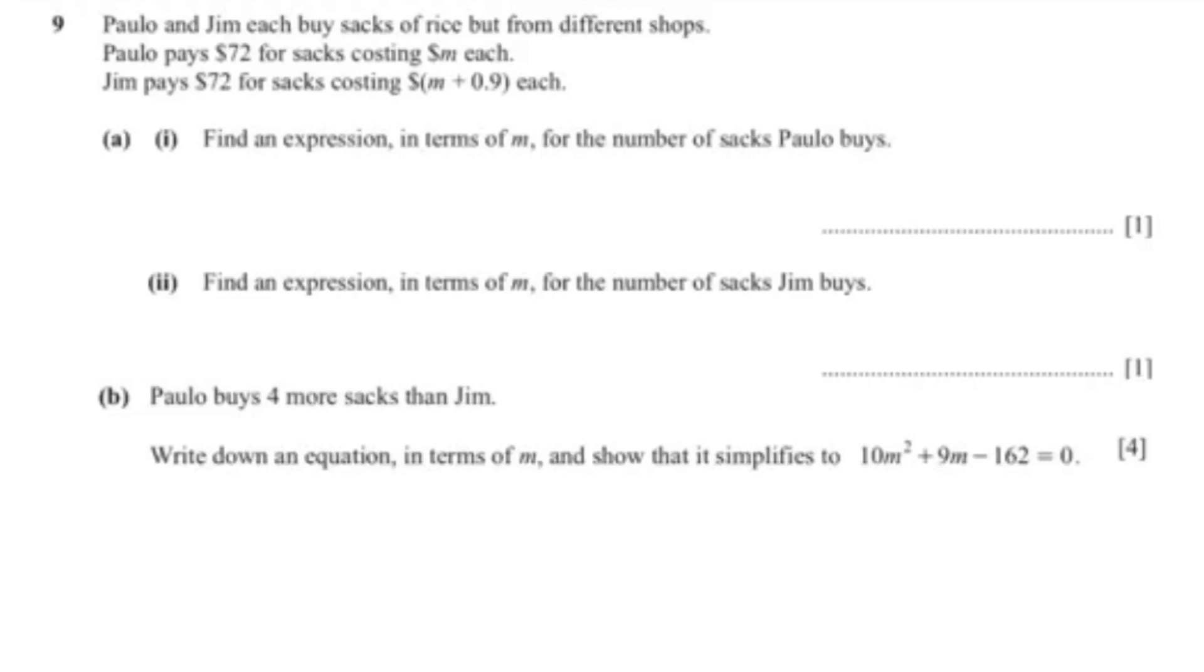You find an expression in terms of M for the number of sacks Paula buys. So that is 72 over M. And for Jim it is 72 over M plus 0.9.